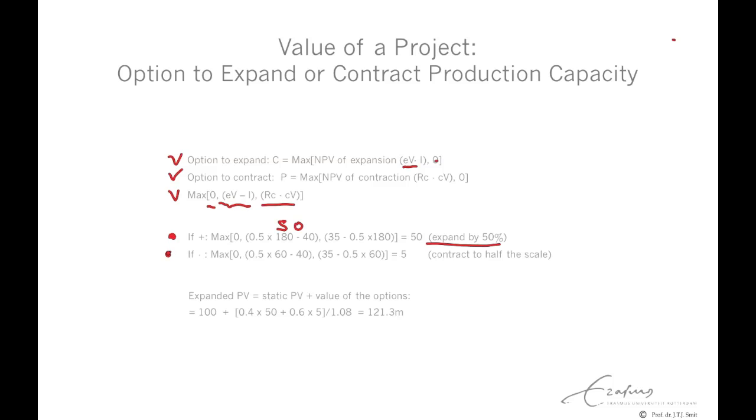Now consider the case that the value declines. If the value declines, we have either do nothing, or expanding, 50% times 60, minus 40, that's negative, so we don't expand. But we can contract the recovery value 35, and the decline in production is 0.5 times 60, so the contraction option is worth 5 at maturity. So at maturity, we can either realize an additional value of 5 by contracting, or 50 by expanding.